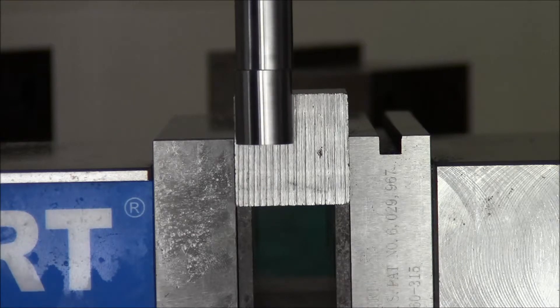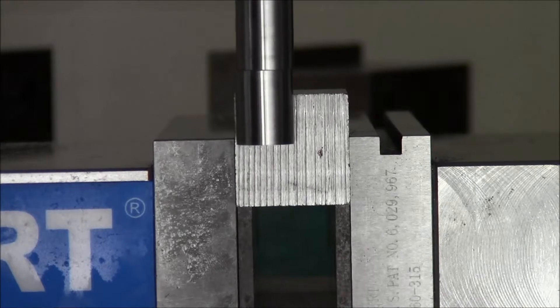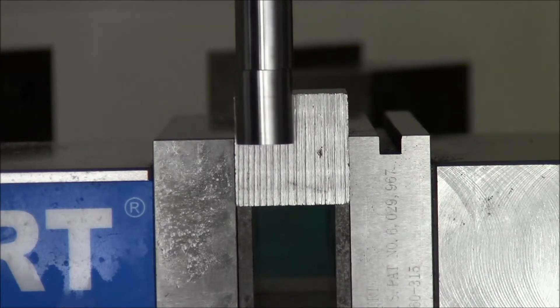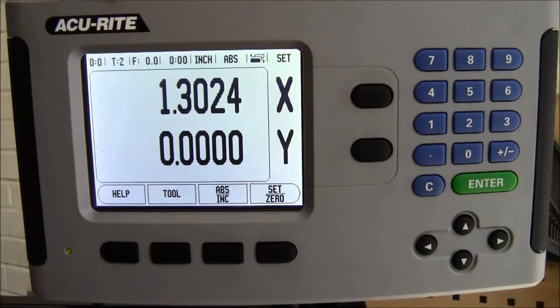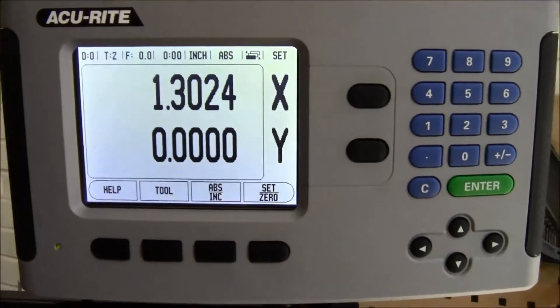That is why your vantage point for performing this process is very important. When the lower portion of the edge finder pops to the side, you have found the edge. Once you have found the edge, you must zero out the digital readout.